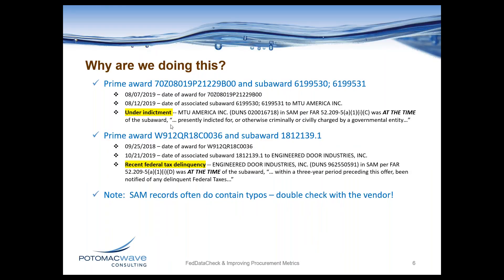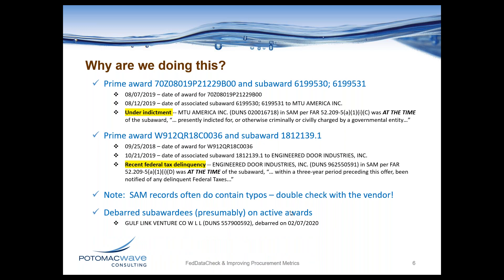One important note: about half the time when a vendor has checked that they're under indictment, it's a typo — they checked the wrong box. The first thing to do is check with the vendor and ask if they really meant to indicate they were under indictment. They'll often say no and go correct their SAM record. However, GAO will still look at the boxes as checked, not as they should have been checked — procedures are evaluated based on what the boxes indicate, not what was intended.